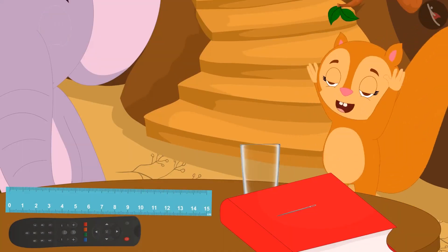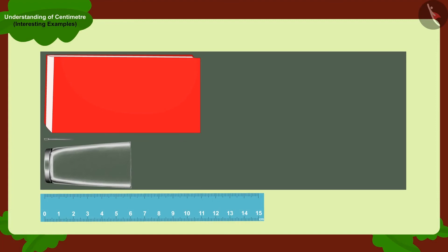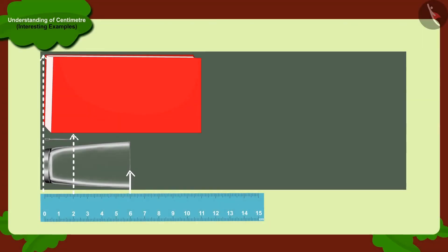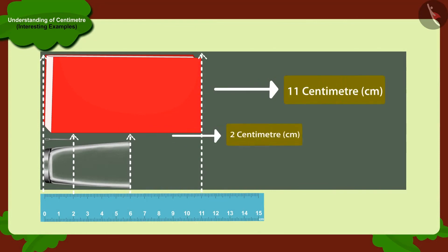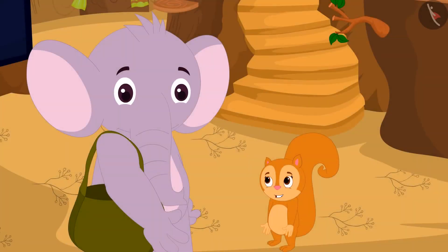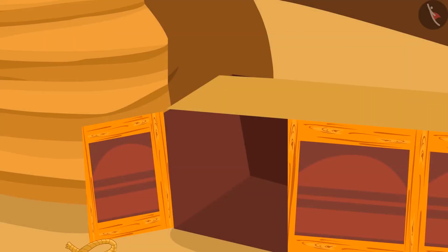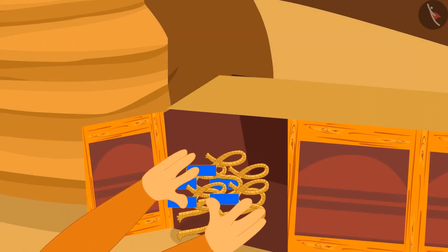After saying this, Chanda started dancing happily. Kids, here are some items from Chanda's house — can you tell how many centimeters their length is? If you want, you can pause the video and find the answer. Well done, kids — you have found the right answer! Chanda thanks Appu for telling her about the ruler and centimeter, and puts the pile of ropes in her house into a cupboard.